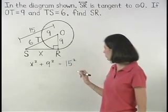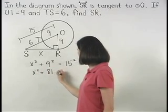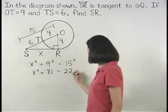Which simplifies to X squared plus 81 equals 225.